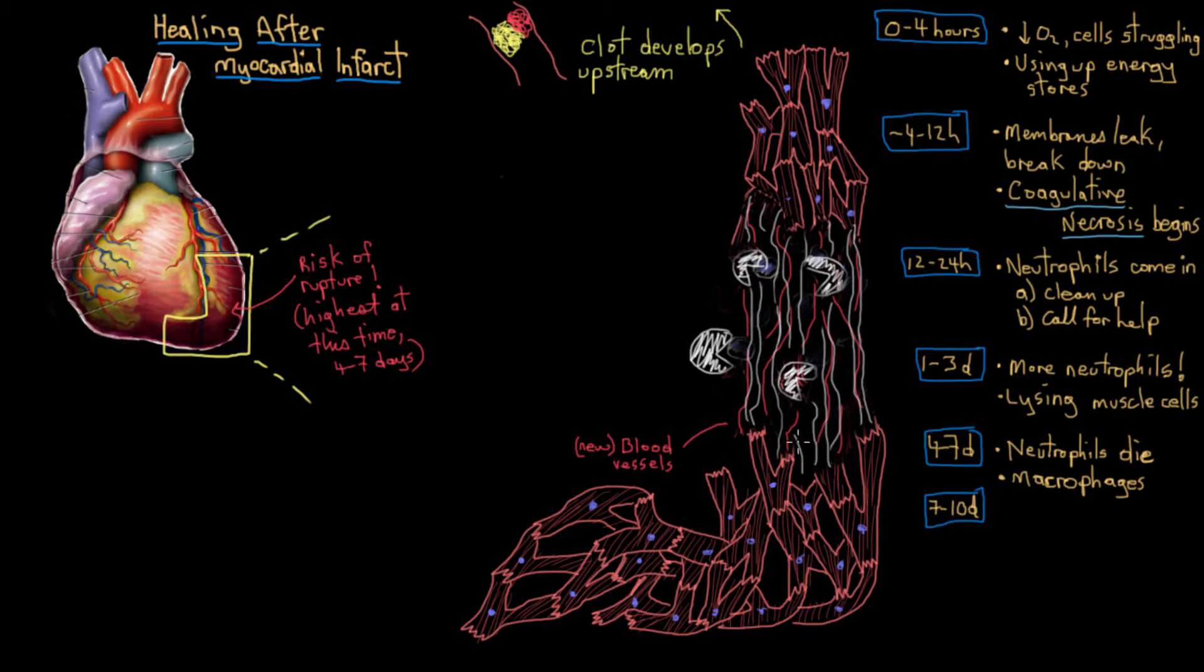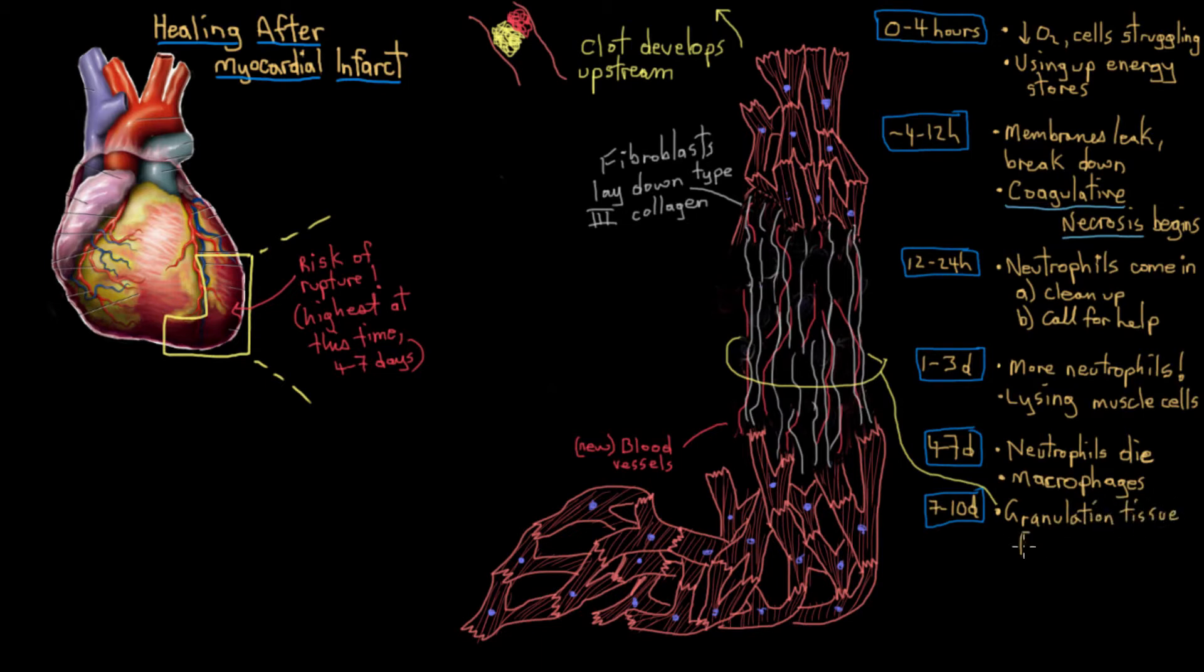laying down these thin, sort of spindly strands of structural protein called type three collagen. So all of this, these new little blood vessels and this new collagen, is collectively called granulation tissue.